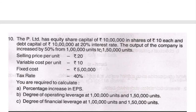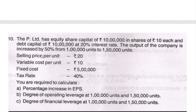P Limited has to pay 20 percent on 10 lakh, that is rupees 2 lakh interest per annum. The output of the company is increased by 50 percent from 1 lakh units to 1 lakh 50,000 units. The selling price per unit is rupees 20, variable cost per unit is rupees 10, fixed cost is rupees 5 lakh — the fixed cost remains the same but variable cost varies with sales. The tax rate is 40 percent.